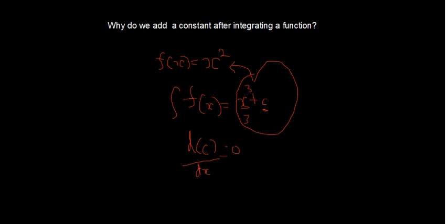We don't know the constant. The value of x cube by 3 plus 2, or plus 1, or plus anything is the same. If we just differentiate that, we get the same x square. So we just add a general constant. It can be anything: 1, 2, 3.